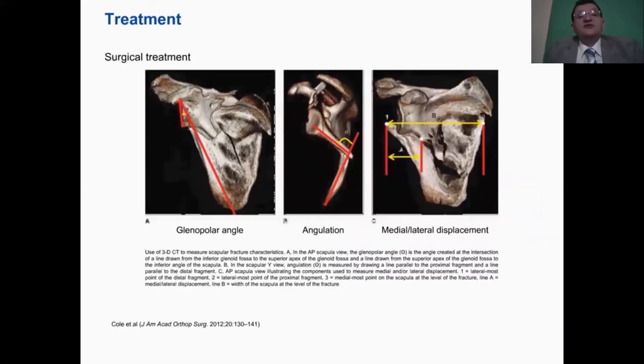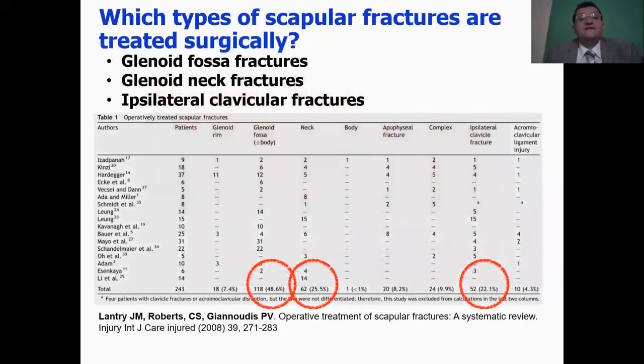Treatment. Surgical treatment recognizes three major points we have to take into consideration. One is known as the glenopolar angle, which represents the rotation of the glenoid, while the angulation of the body is also something to be considered, and the amount of medial and lateral displacement. These three elements affect the movement of the shoulder, the shoulder dyskinesia, and the function of the muscles around the shoulder, especially the rotator cuff.